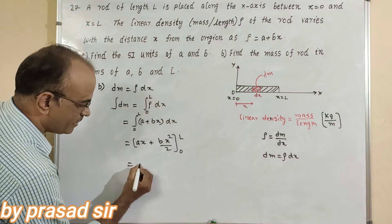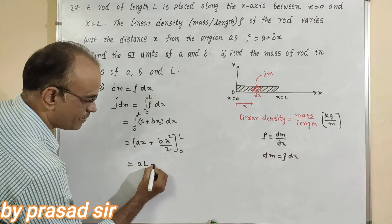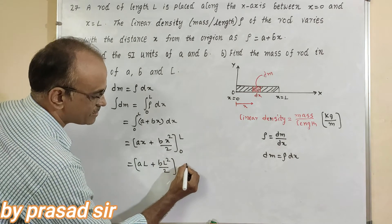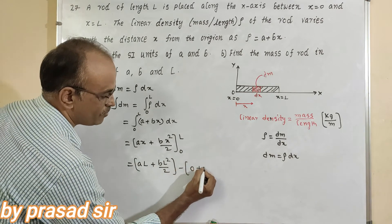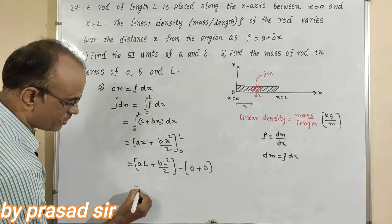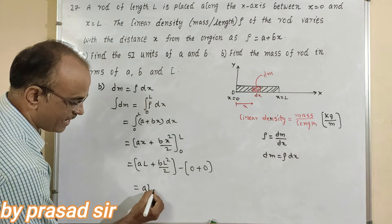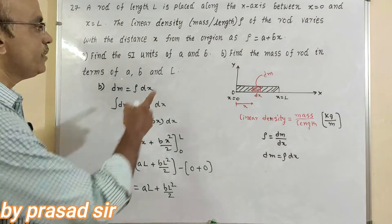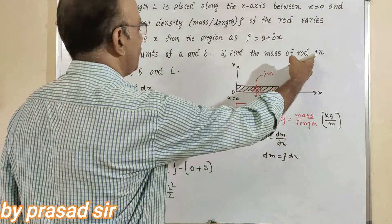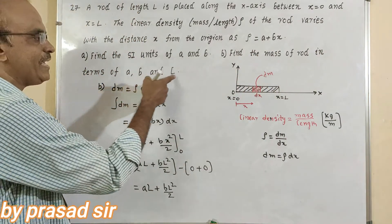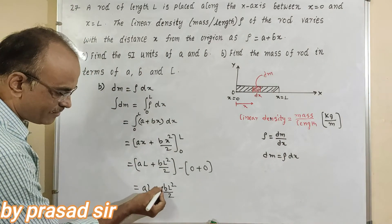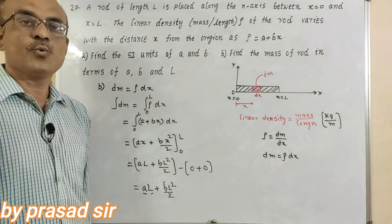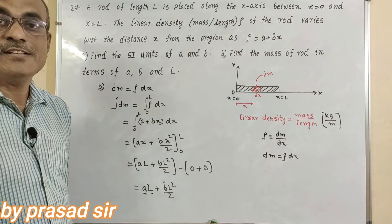So first of all A into L plus B into L square by 2 minus 0 plus 0. So the final answer is AL plus BL square by 2. Remember what they asked, find the mass of the rod in terms of A, B and L. Here A is there, B is there and also L is there. This is the solution for question number 27.